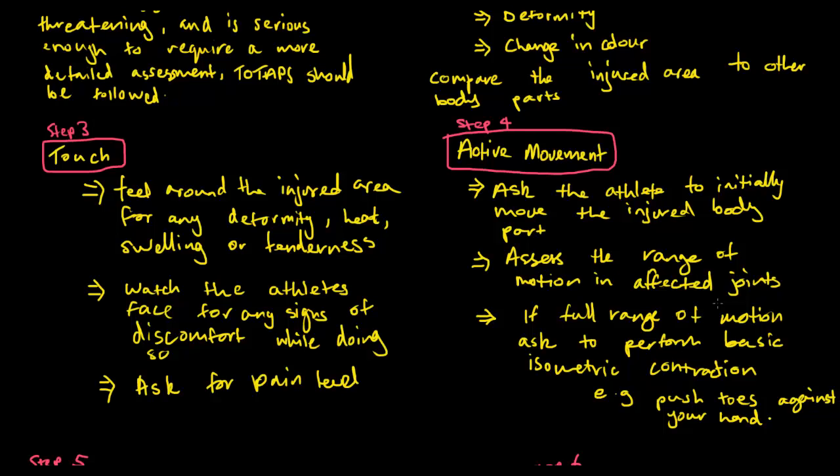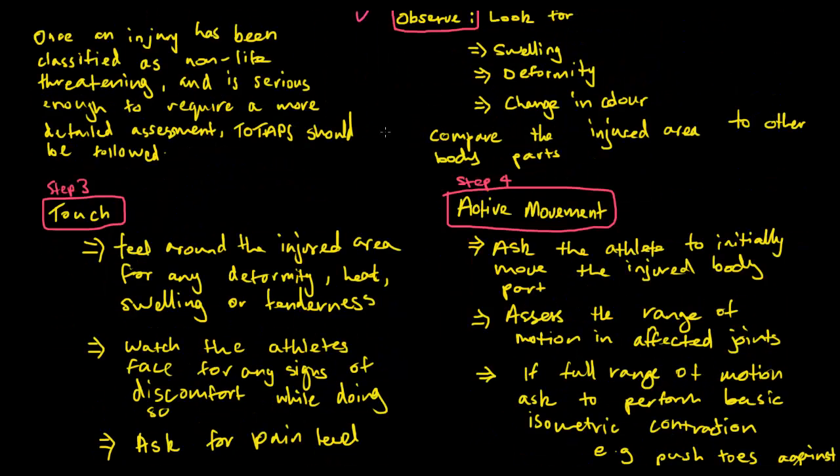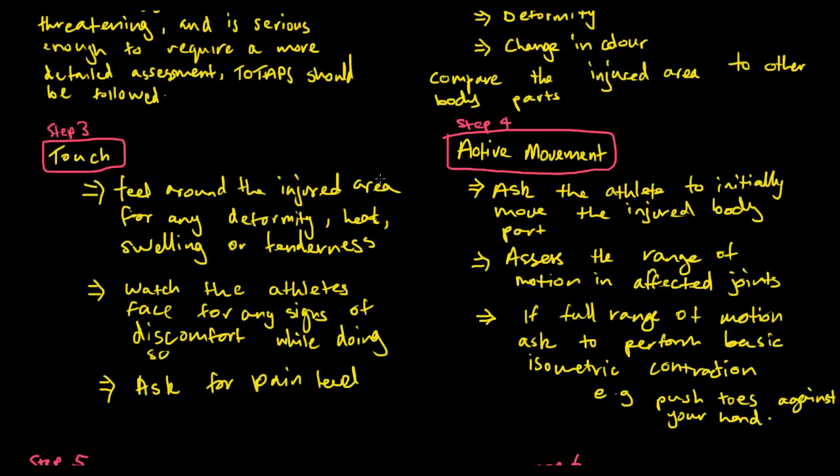The next step is the active movement step. There's active and passive movement. I'll be going through active movement first. It's very simple, just a little change between the two. In active movement, you're actually asking the athlete himself or herself to move the injured area. You're not doing anything, you're simply observing, watching them move the injured area and you need to see how far they can actually move it. You need to make sure that they can try and move it to the full range of motion. If they can move it to the full range of motion, you should perform isometric contraction tests, which are basically putting your hands out and making the athlete push the toes as far as they can against your hand. Active movement is when the athlete themselves tries to move the injured area. You assess the range of motion in the affected joints.